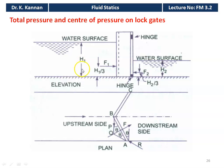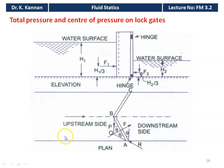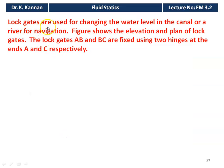The water surface on the upstream side is at the height of H1, and the water surface on the downstream side is at a height of H2. For the log gate, we have hinges at the two ends; the log gate can swing either closed or open. F1 acts at a height of H1/3 and similarly F2 equals H2/3. Log gates are used for changing the water level in the canal or a river for navigation purposes.